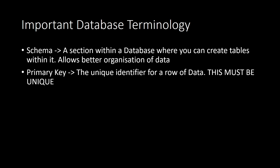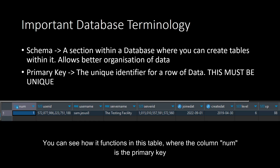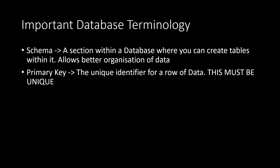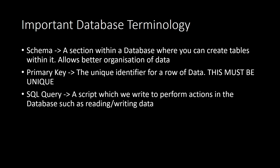Let me go through some important database terminology. First: schema — as shown in the diagram, your database contains schemas which hold all your tables and information. A database can have multiple schemas depending on what information you're storing, like user information or business data. Next: primary key. In a database table, the primary key is the unique identifier for a row of data. For example, primary key number one might correspond to the username 'Bob' with an ID of 654321. This primary key must be unique — if two rows share the same primary key, there will be a conflict.